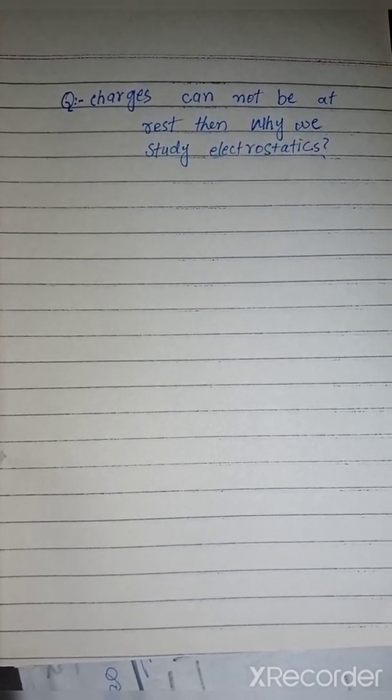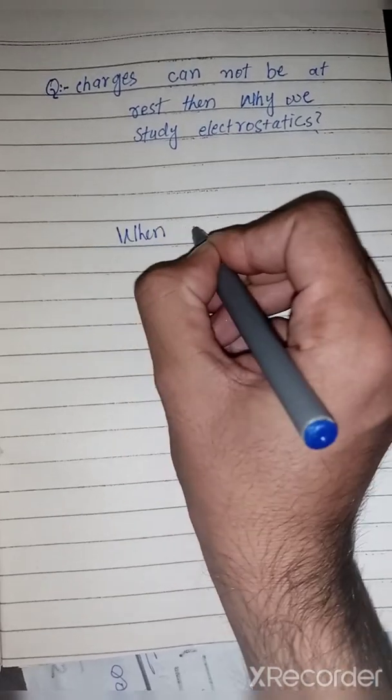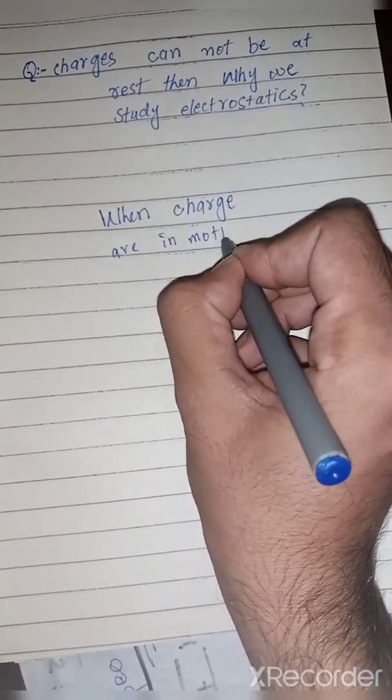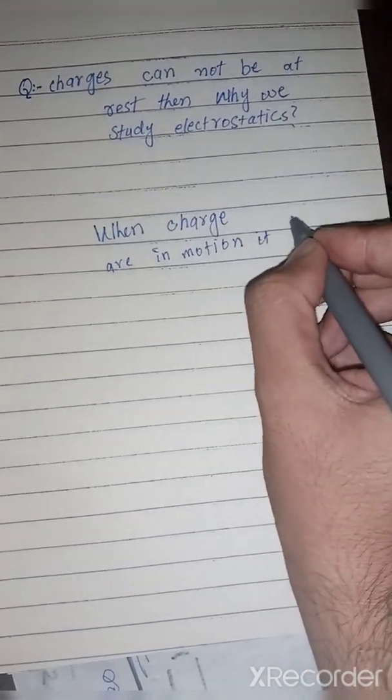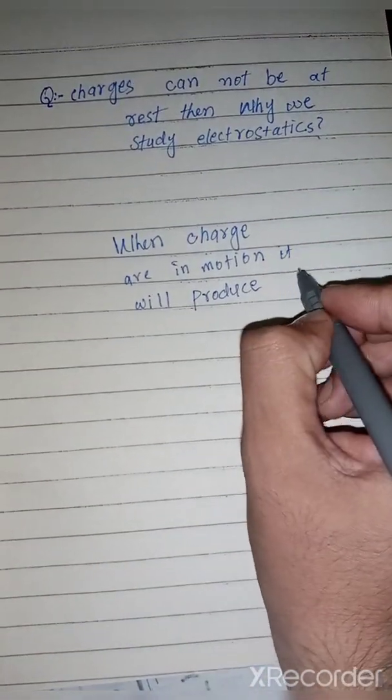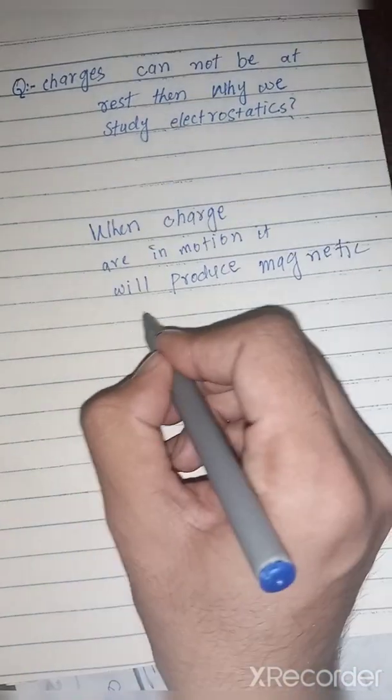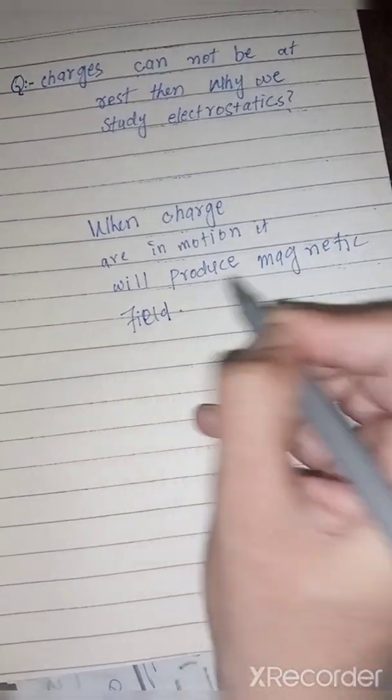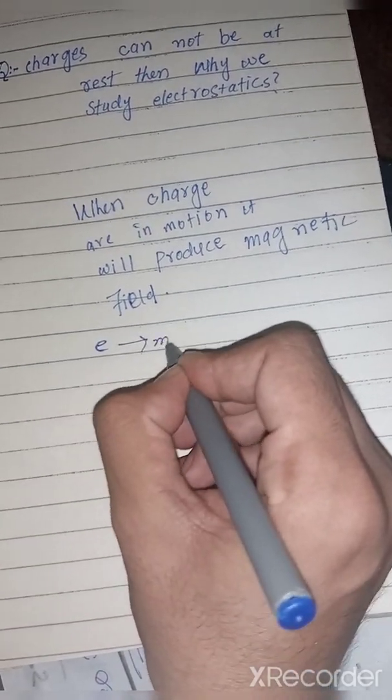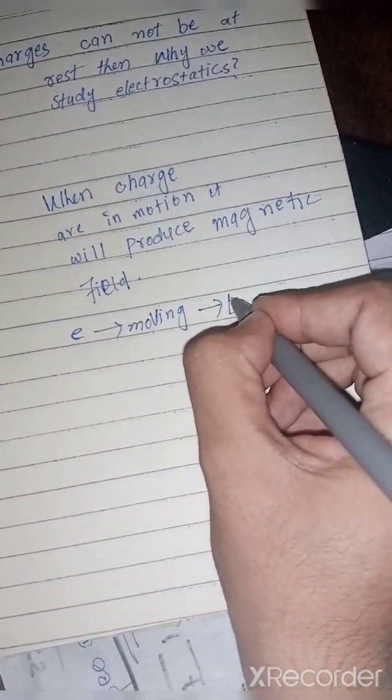So the answer is that when charges are in motion, it will produce magnetic field. For example, if charges are moving, there will be magnetic field produced.